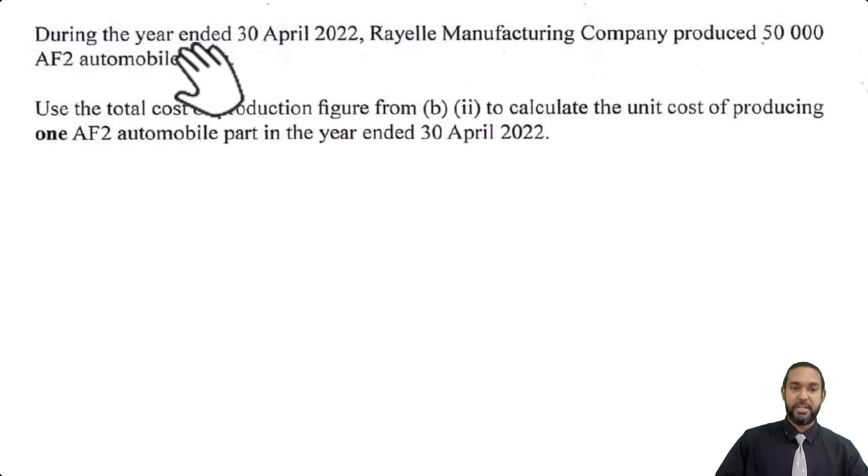So, part C says during the year ended 30th April 2022, Rael Manufacturing Company produced 50,000 AF2 automobile parts. Use the total cost of production figure from B part 2 to calculate the unit costs of producing one part for the year ended 30th April 2022. So, all we have to do is take the 425 from just now and divide by the 50,000.